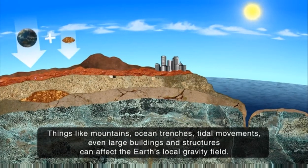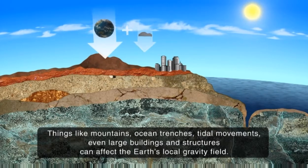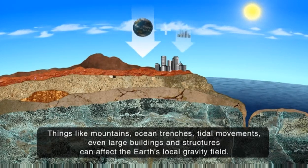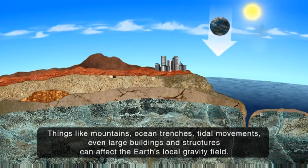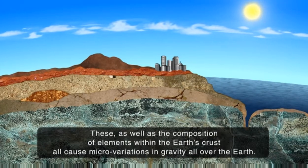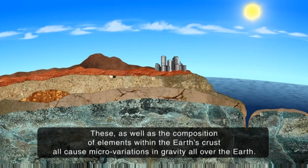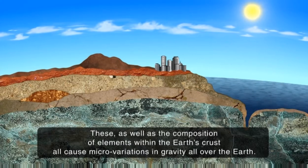Things like mountains, ocean trenches, tidal movements, even large buildings and structures can affect the Earth's local gravity field. These, as well as the composition of elements within the Earth's crust, all cause micro-variations in gravity all over the Earth.